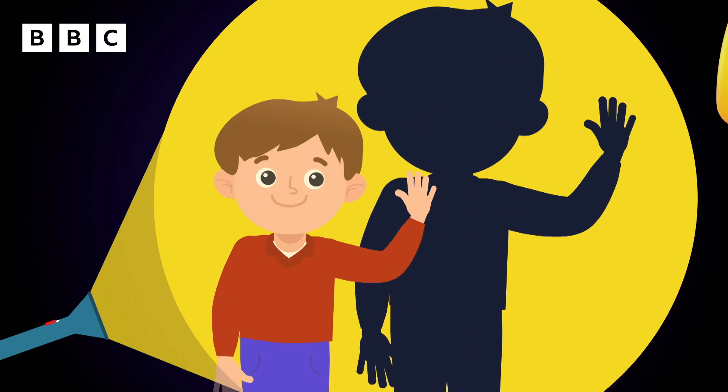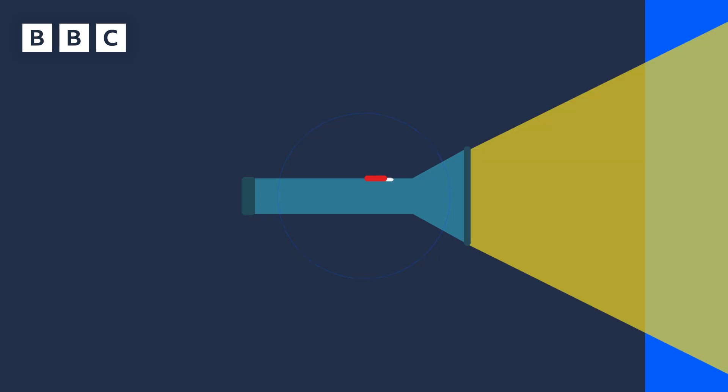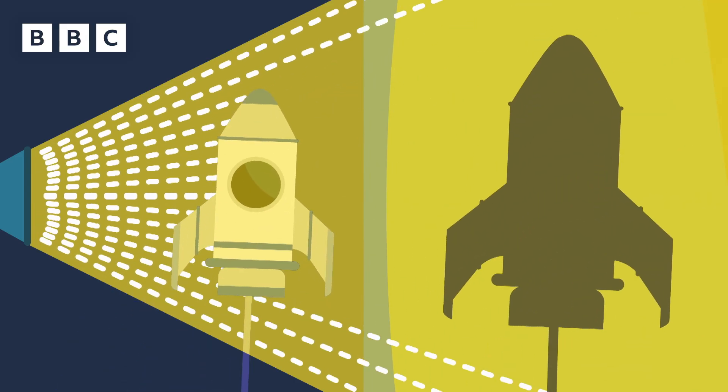Shadows can be really fun. A shadow is the dark shape made when something blocks light from a light source like the sun, or a torch. That's because light travels in straight lines, so it can't go through an object, or go round it.